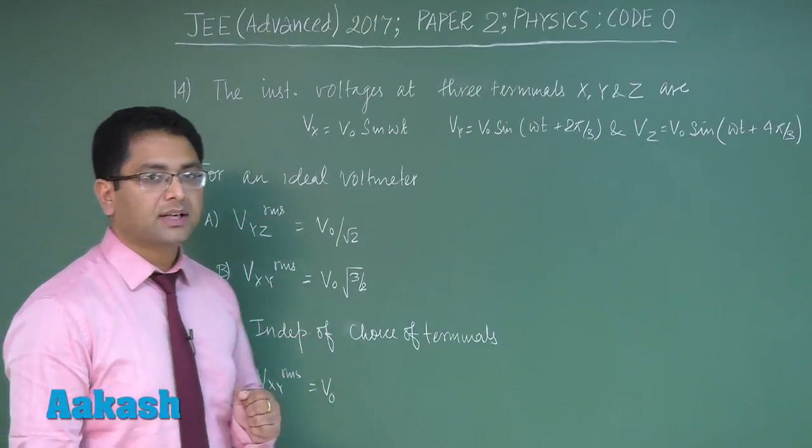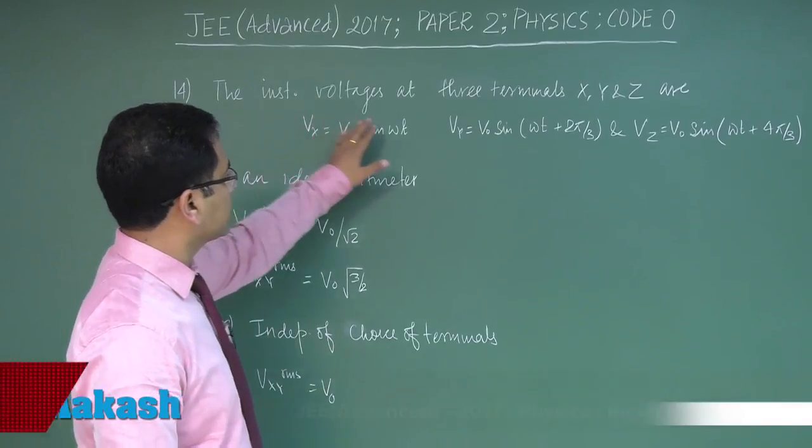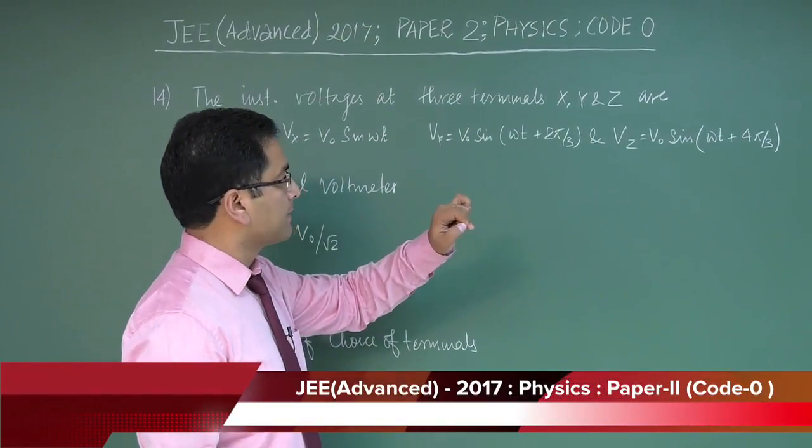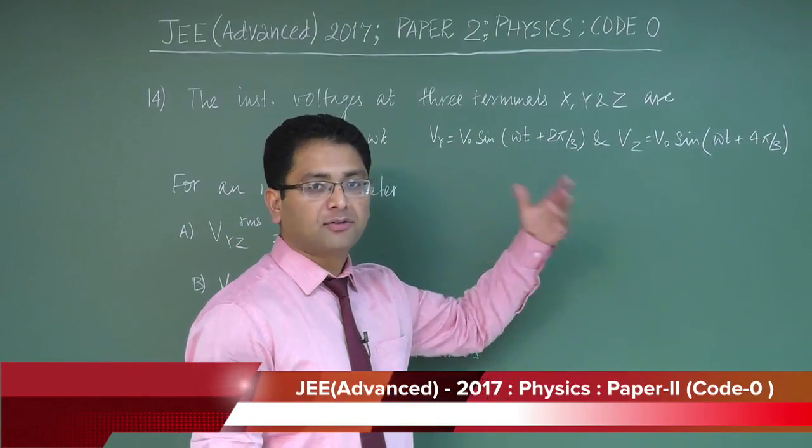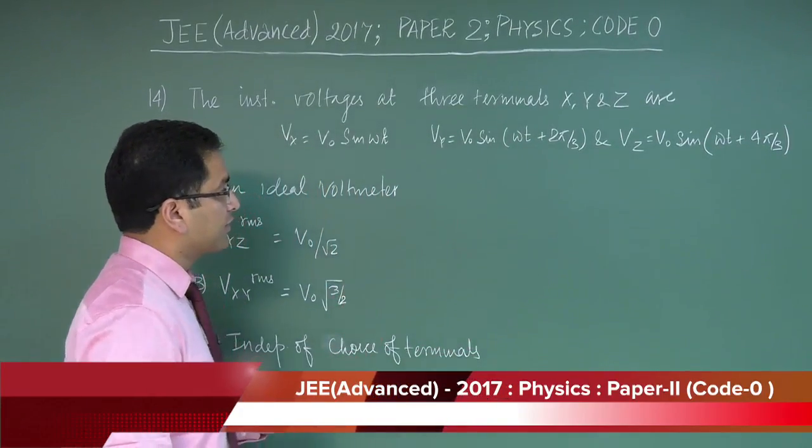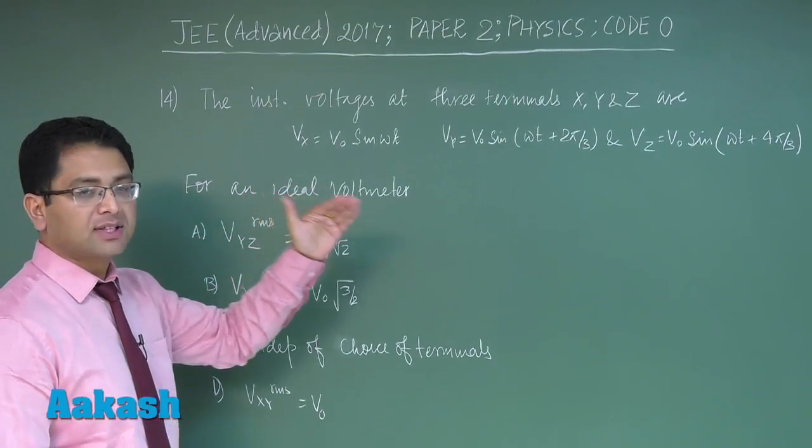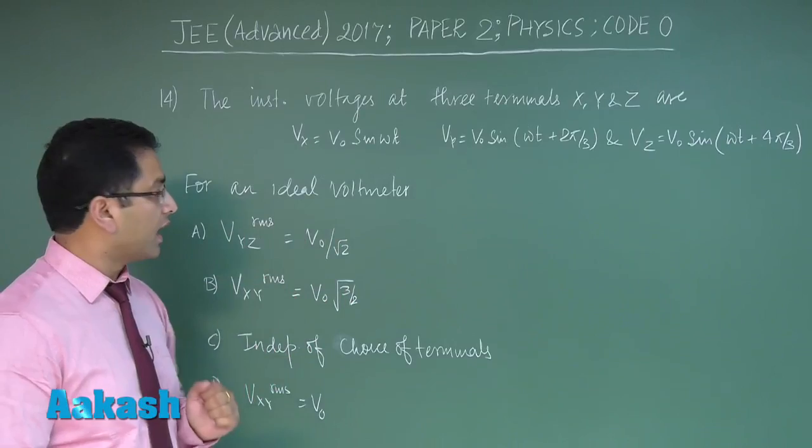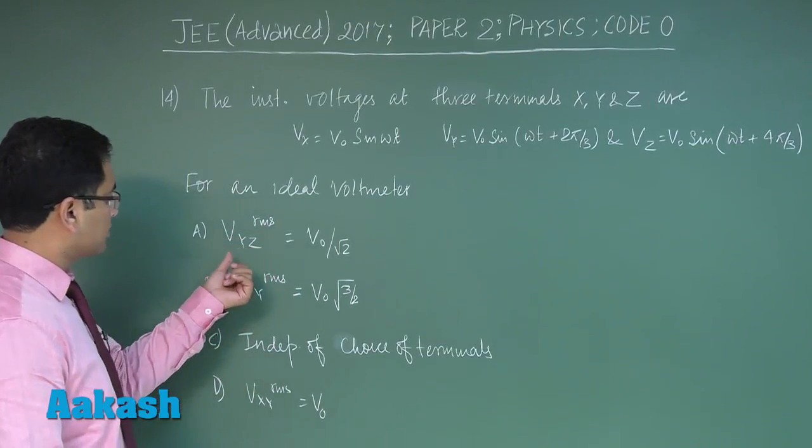Alright, question number 14 is from AC and it says the instantaneous voltages at three terminals. Now these terminal voltages are defined with respect to any reference point. For an ideal voltmeter, one should always know that a voltmeter reads the RMS value, but it's also specified in the question. We need to find the potential difference read by the voltmeter across YZ, XY, and so on.